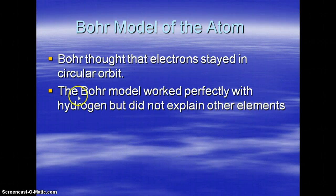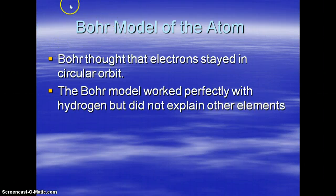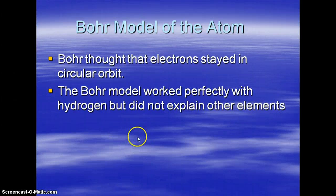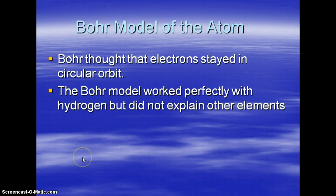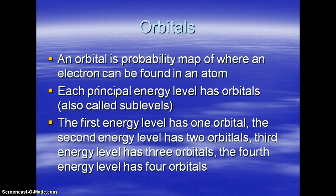The scientist Niels Bohr — his model of the atom described these electrons in the principal energy levels and said that they were in a circular orbit, kind of like how the planets revolve around the sun in our solar system. The electrons orbit around the nucleus. We found out later that Bohr's model worked perfectly for the element hydrogen, but it didn't explain any of the other elements.